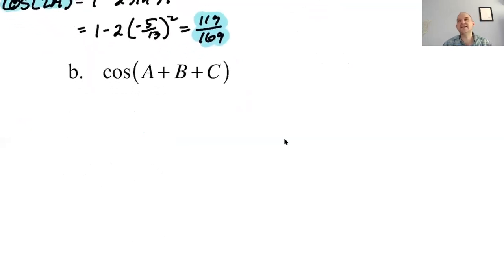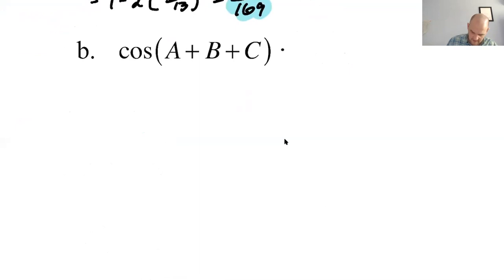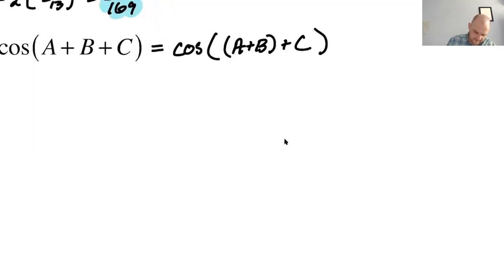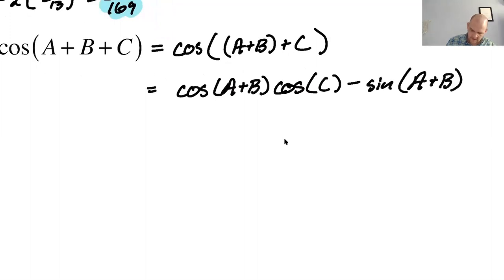Cosine of a plus b plus c. I can do any number of things. So I could make it the cosine of a plus quantity b plus c. I can make it the cosine of quantity a plus b plus c, which is what I'm definitely going to do. So here it's going to be the cosine of the quantity a plus b plus c. So that'll be the cosine of a plus b cosine of c minus sine of a plus b and then sine of c.